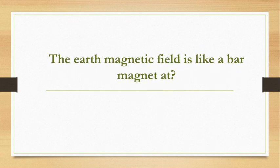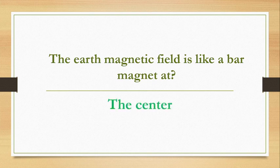The earth's magnetic field is like a bar magnet. At which position? The answer is at the center — the earth's magnetic field is like a bar magnet at the center.